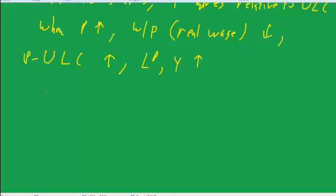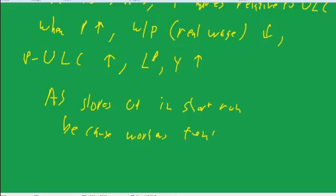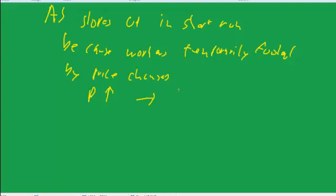So the aggregate supply slopes up in the short run because workers are temporarily fooled by price changes. Prices going up reduce real wages, prices going down increase real wages. And thus, and so that's where we get this upward sloping aggregate supply in the short run, but we think in the long run nobody is fooled.